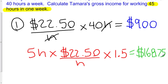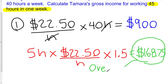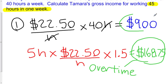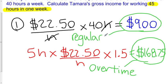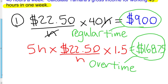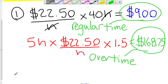So $168.75 is the overtime earned, and $900 is the regular time. Her gross earnings for the week are her regular time plus her overtime.